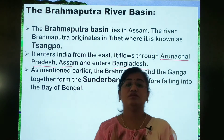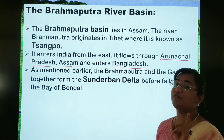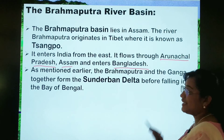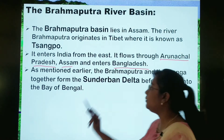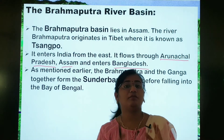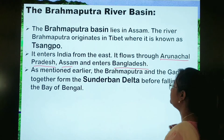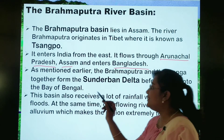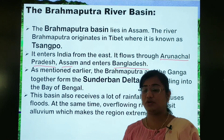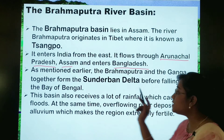Donu rivers mil kar Sundarban delta ko form karte hai, as we learned in our previous class when we were discussing about the Ganga river basin. They form the Sundarban delta before falling into the Bay of Bengal. This basin also receives a lot of rainfall, which causes floods.